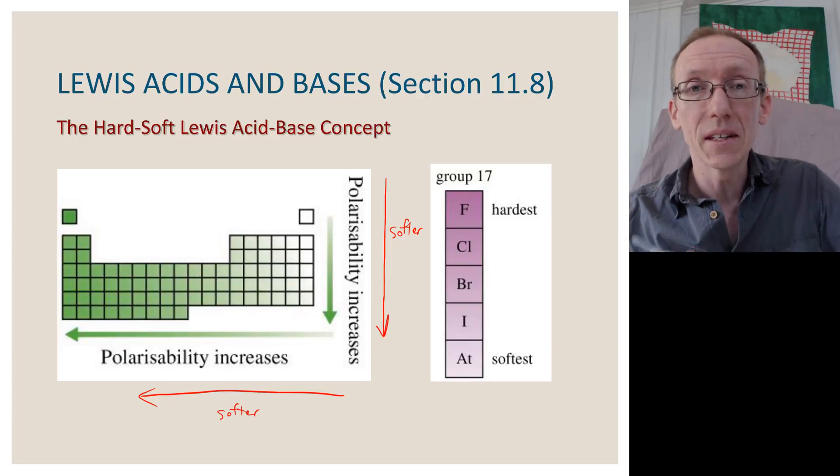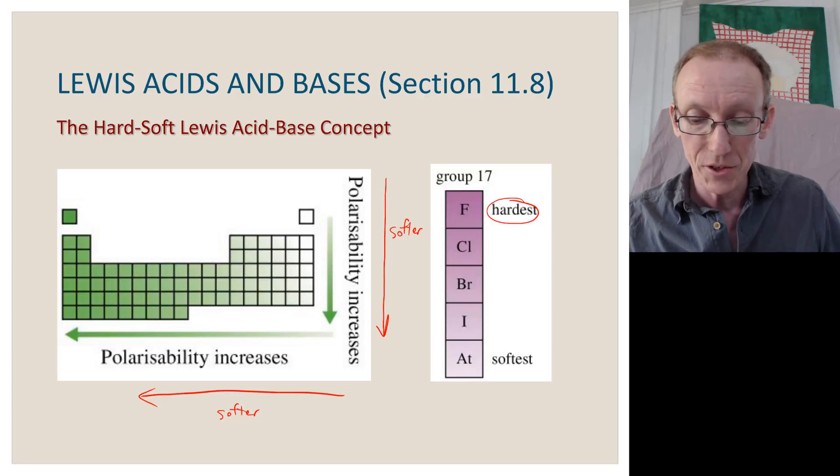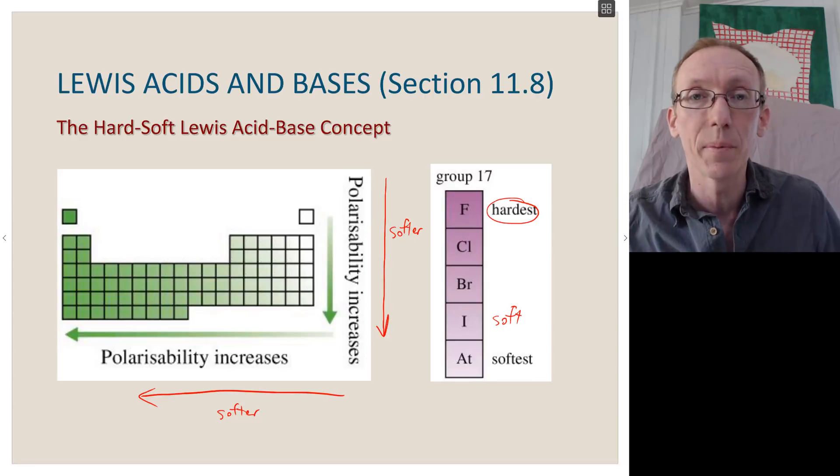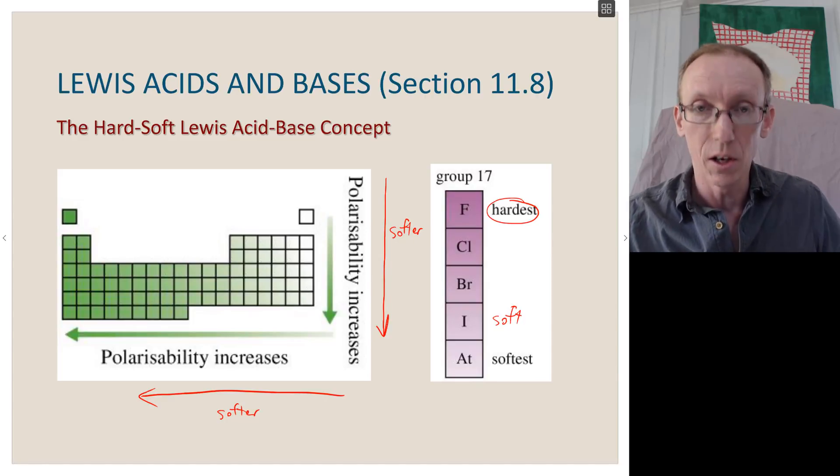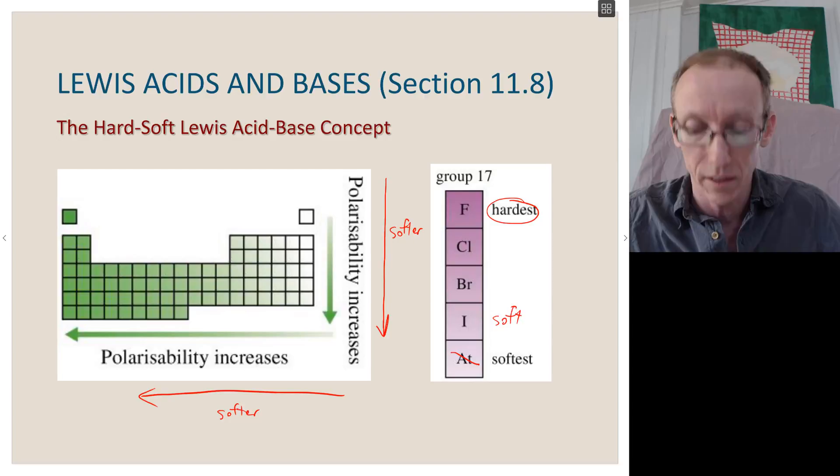The most important group to remember these hard-soft rules for are the halogens. Fluoride and fluorine is very hard. It's right in that top right-hand corner. Its electron cloud is not very polarizable at all. And so fluorine tends to make interactions with other hard elements. Iodide, on the other hand, is an iodine-containing compound. It's very soft. It's a very low-row element, and it has a very polarizable electron cloud. Don't worry about astatine too much. It's radioactive, and it's quite a rare element. So our consideration of the halogens normally goes from fluorine through chlorine, bromine, and up to iodine.